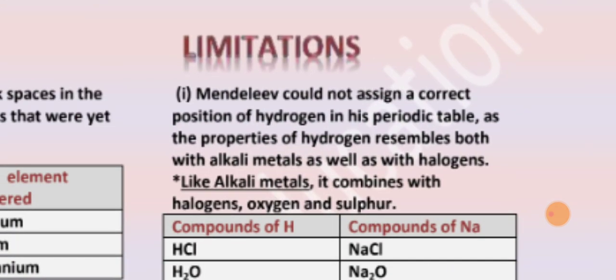Now the limitations: Mendeleev could not assign a correct position of hydrogen in his periodic table, as the properties of hydrogen resemble both alkali metals as well as halogens. Mendeleev couldn't tell where to keep it because hydrogen, alkali metals, and halogens all behave similarly in how they react with halogen, oxygen, and sulfur.